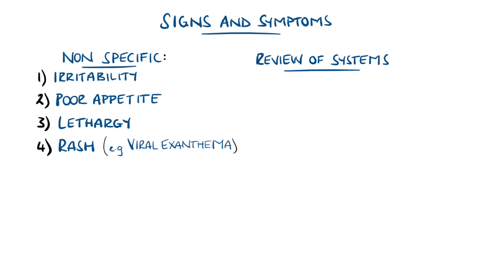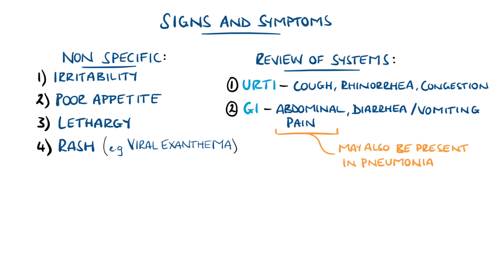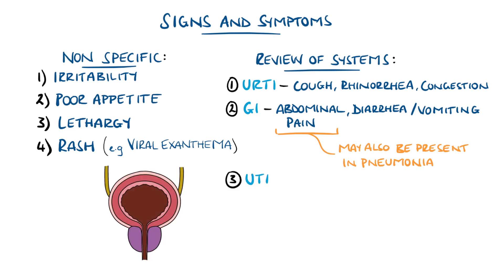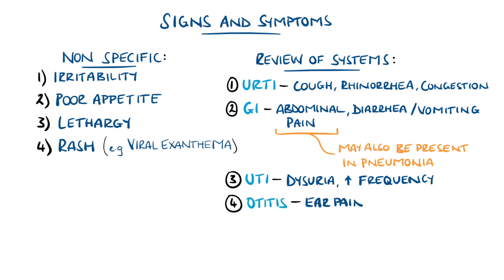Common symptoms indicating the possible system affected include a cough, rhinorrhoea, or congestion in upper respiratory tract infections; abdominal pain, vomiting, and diarrhoea in gastrointestinal infections — though abdominal pain is non-specific and may even represent pneumonia, especially with shortness of breath, or a urinary tract infection alongside dysuria. Increased urinary frequency is also a symptom of UTIs. Ear pain, which can manifest as the child tugging on their ear, poor sleep, and possibly discharge point towards an ear infection.